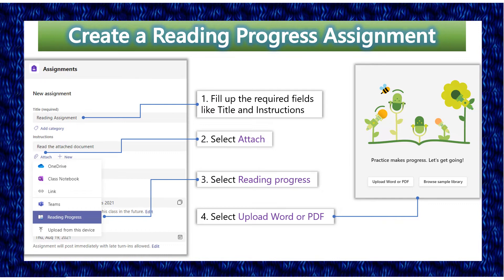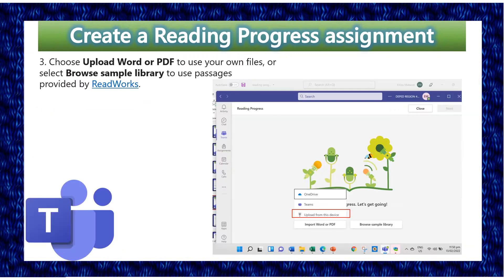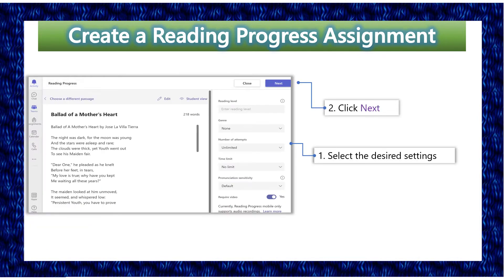Number 4: Select Upload Word or PDF. Choose Upload Word or PDF to use your own files, or select Browse Sample Library to use passages provided by ReadWorks. You will be seeing the reading material to be read by your students. Don't forget to select the desired setting and then click Next.